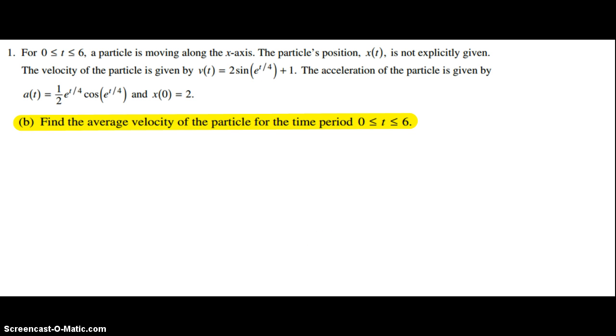First, I'm going to write down the average velocity formula. v_avg equals 1/6, which is 1 over (b - a), times the integral from a to b of v(t) dt.